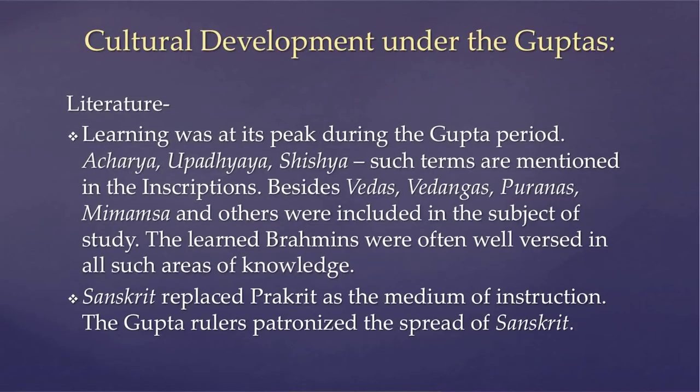Now let us look at cultural development under the Guptas, beginning with literature. Learning was at its peak during the Gupta period. Terms like Acharya, Upadhyaya, and Shishya appear in inscriptions. Besides the Vedas, Vedangas, Puranas, Mimamsas, and others were included within subjects of study. The learned Brahmins were well versed in all such areas of knowledge. Lessons were imparted orally; Fahian during his travels found no written texts except for disciples in Pataliputra with copies of Sutra, Vinaya, and some abstracts from Abhidharma — indicating that teachers passed knowledge to their Shishyas orally.